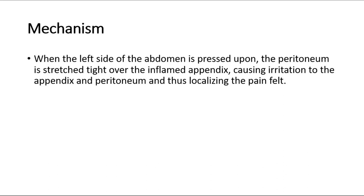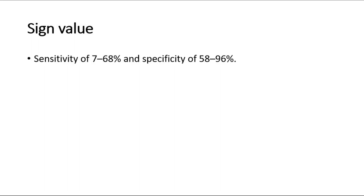For sign value, Rovsing's sign has a sensitivity of 7 to 68 percent and a specificity of 58 to 96 percent.